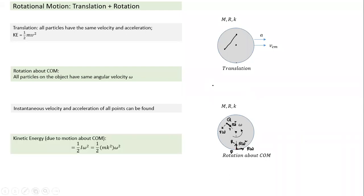The kinetic energy of each particle is one-half mv squared. For an object in pure rotation, the kinetic energy is one-half I omega squared. Since we are considering pure rotation about the center of mass, we write it as one-half I_c omega squared. The moment of inertia I can always be written as mk squared, where k is the radius of gyration.